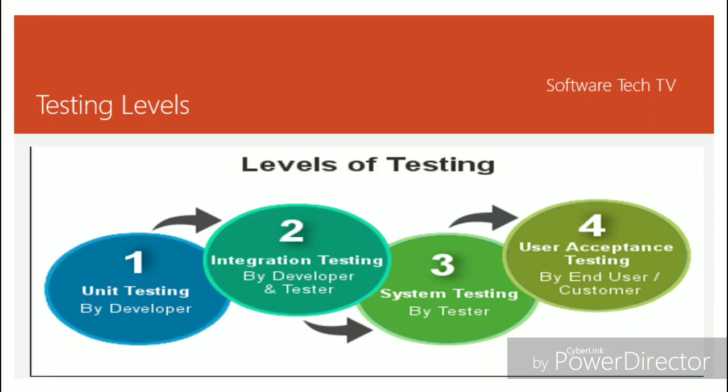The final topic is testing levels. Unit testing is done by the developer. Integration testing is done by both the developer and the tester. After integration testing, we do system testing, which is performed by the tester. At last, we do user acceptance testing, which is done by the end user or customer.